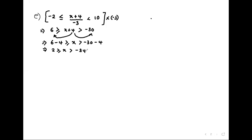This is a complete solution. You can also write it in another form — nothing has changed, you just write it in a different order. The solution set in interval form: negative 34 all the way up to 2, closed.